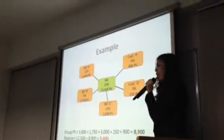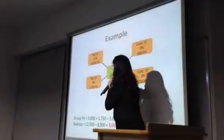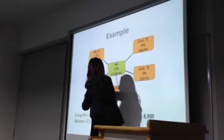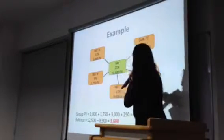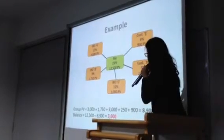Our group PV. So you calculate all. Group, not including yourself. This is your goal. So you calculate 3,000 plus 1,750 plus 3,000 plus 250 plus 900. So you come up with 8,900. Okay? So 8,900.